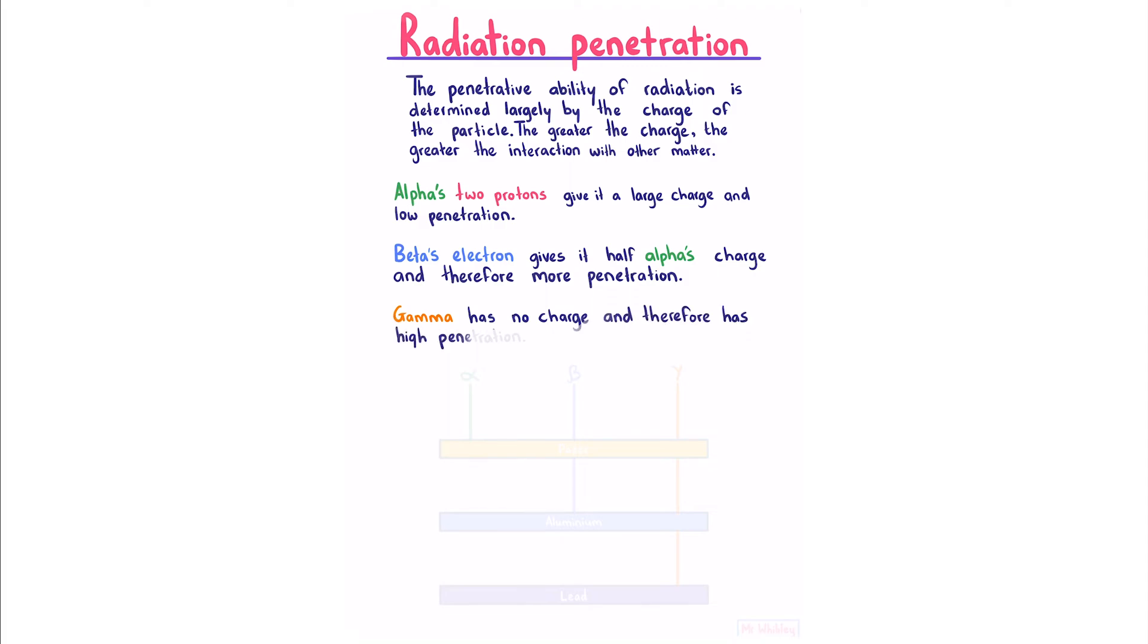And so if we had a paper, aluminum, and lead layer, paper would stop our alpha, aluminum would stop our beta, and lead would stop much of our gamma. Though depending on the thickness, we'd expect some to still make it through.